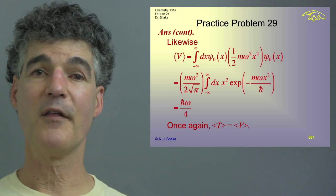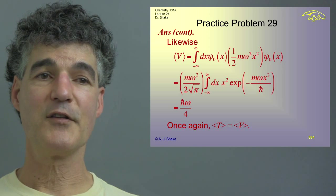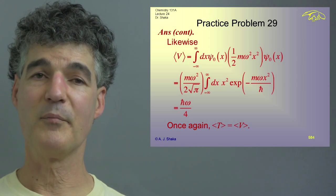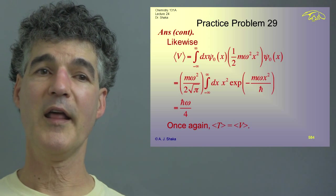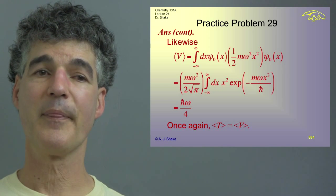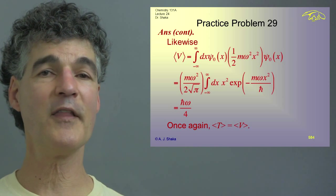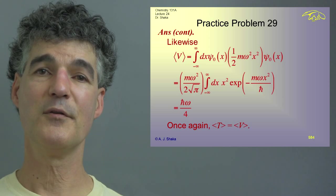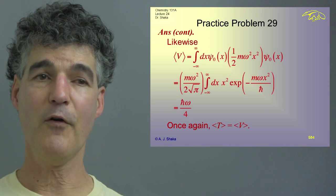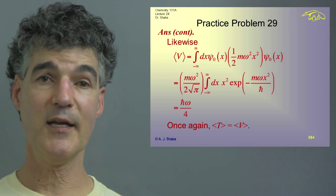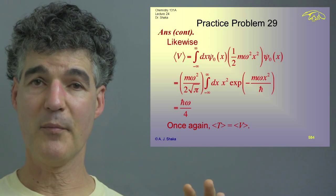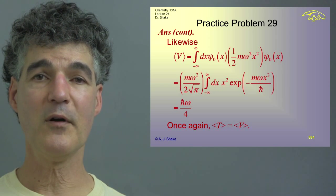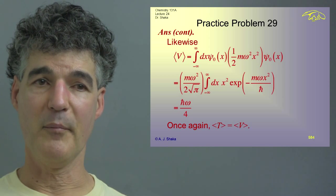The expectation value of the potential ½mω²x² is also computed as an integral. Integrating by parts twice gives ⟨V⟩ = ℏω/4. So for the quantum oscillator, ⟨T⟩ = ⟨V⟩ = ℏω/4 — they are equal — and it satisfies the Virial Theorem once again.